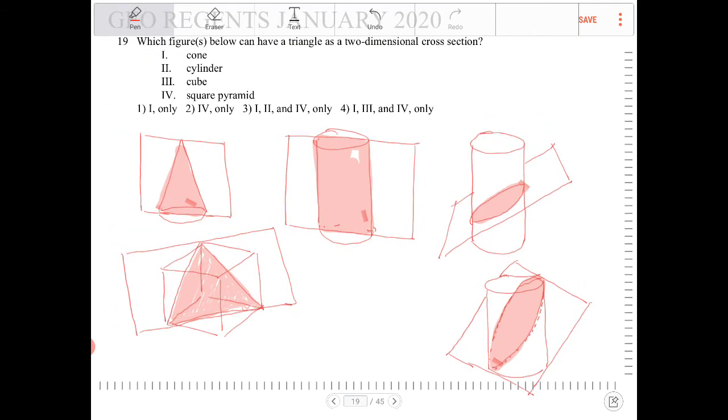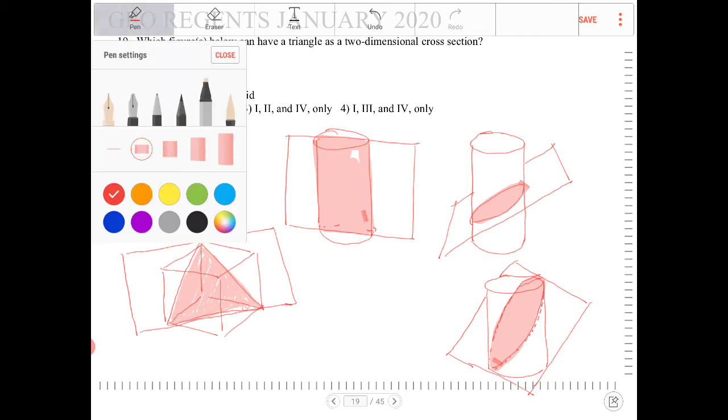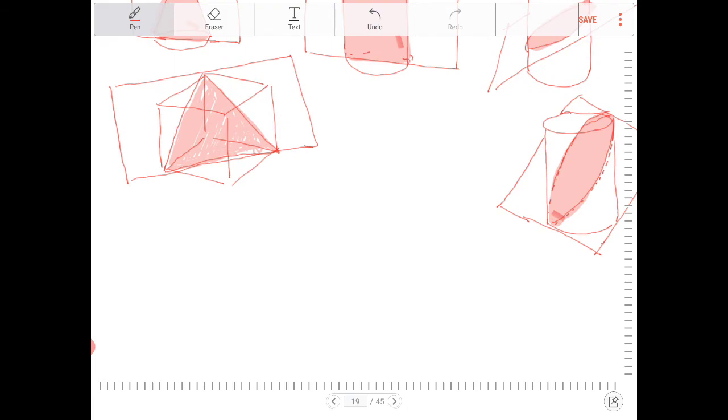All right, what about a square pyramid? When they say square pyramid, what they mean by that is a square base pyramid. And I hope that this would be a little more obvious, just because you see triangles happening there. I'd say the trickiest thing in this question is the cube.